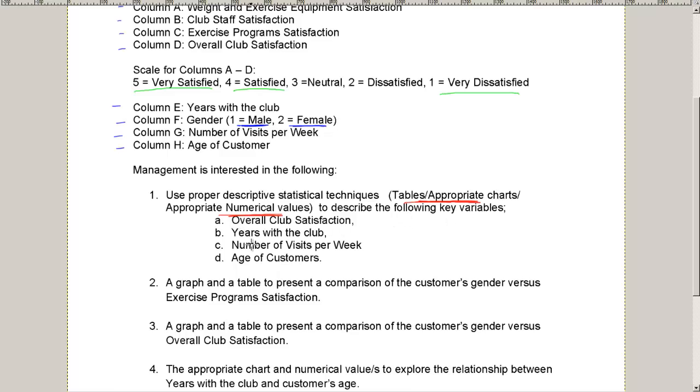So we've got overall club satisfaction, years with the club, number of visits per week, and the age of customers. So we have four different variables and we're expected to create tables, charts, and numerical values. Well look at how this works.